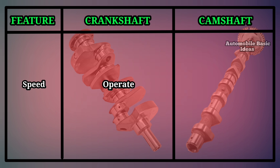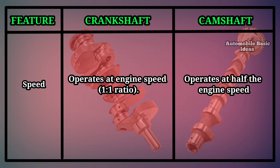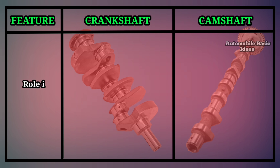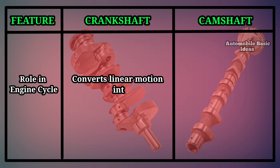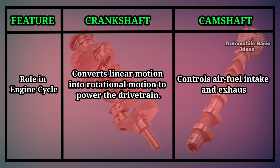Speed: The crankshaft operates at engine speed, a one-to-one ratio. The camshaft operates at half the engine speed in four-stroke engines, a two-to-one ratio. Role in engine cycle: The crankshaft converts linear motion into rotational motion to power the drivetrain. The camshaft controls air-fuel intake and exhaust gas release.